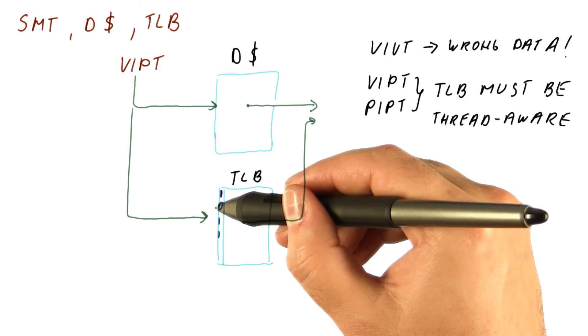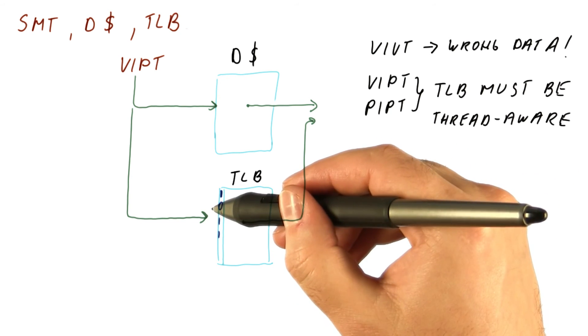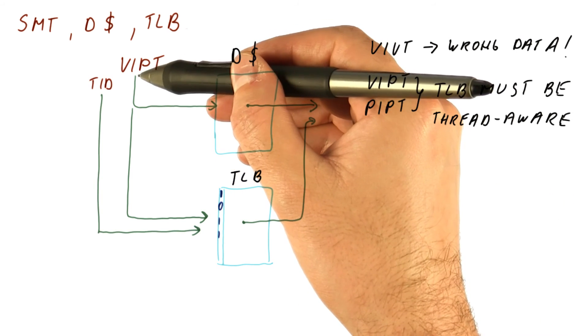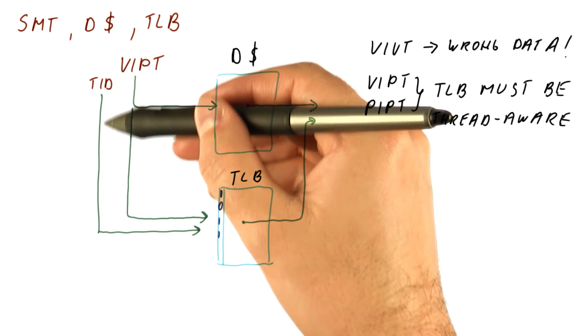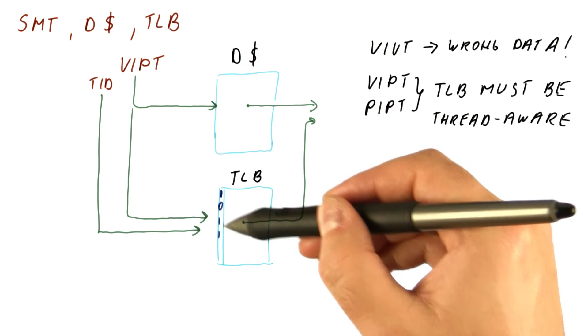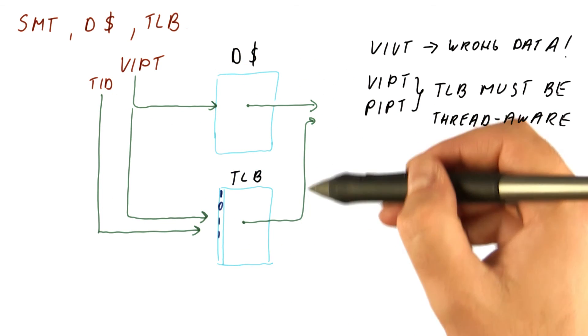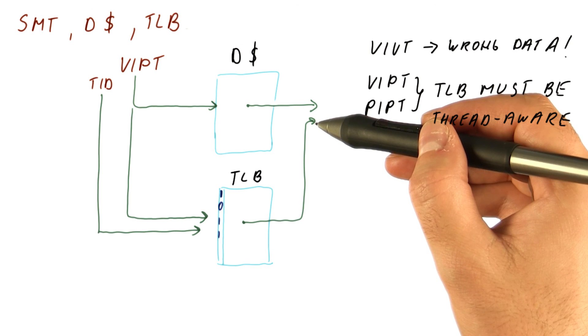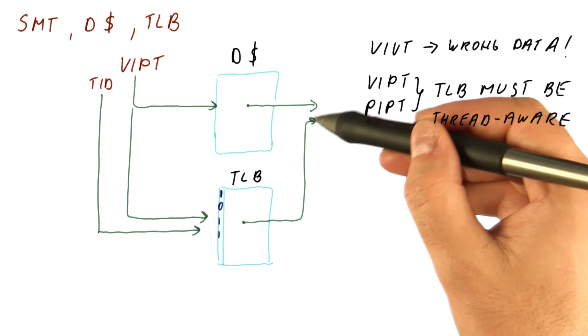And we will only be looking at entries that both match our virtual page number and also match our thread ID. So we will now send the page number and also the thread ID here. And the TLB needs to match both before it treats this as a TLB hit and produces the physical address here.